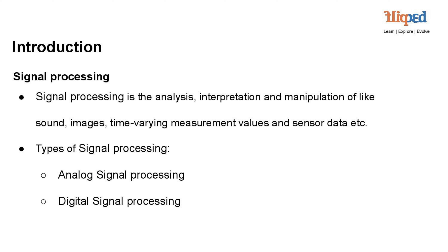Signal processing is the analysis, interpretation, and manipulation of various types of data such as sound, images, time-varying measurement values, and sensor data. It involves applying mathematical and computational techniques to process and extract meaningful information from these signals. Types of signal processing include: 1. Analog Signal Processing, which deals with continuous signals using electrical components like filters and amplifiers. 2. Digital Signal Processing (DSP), which handles discrete signals with computers or digital hardware, enabling tasks like noise reduction and data compression.